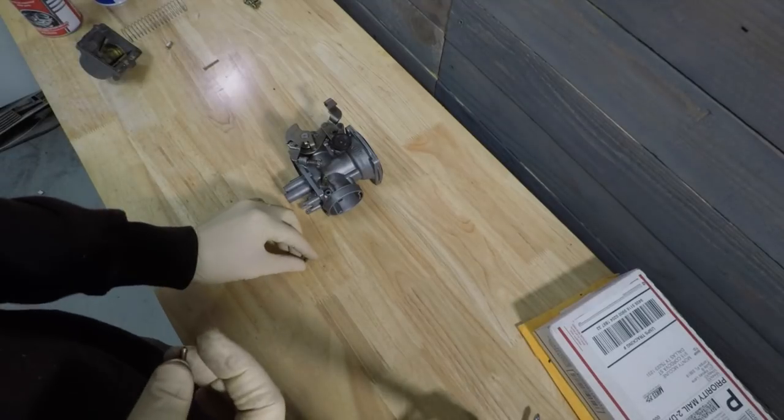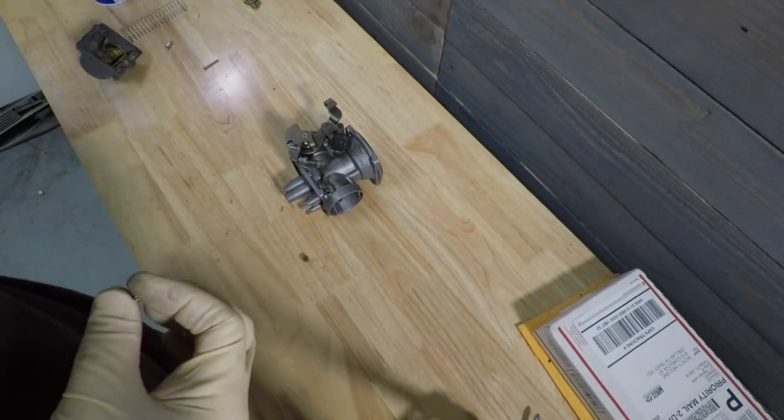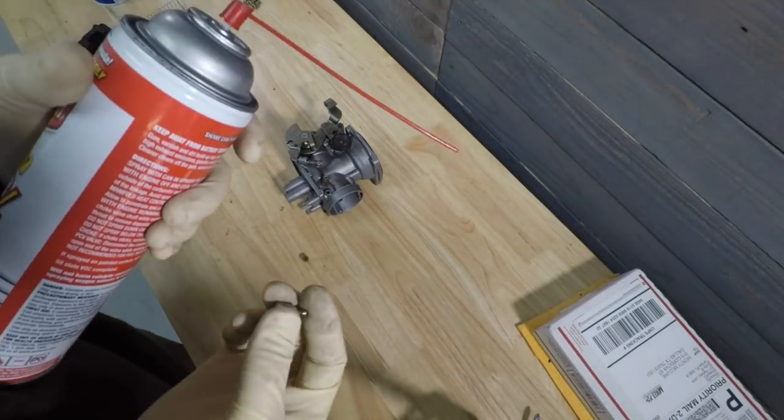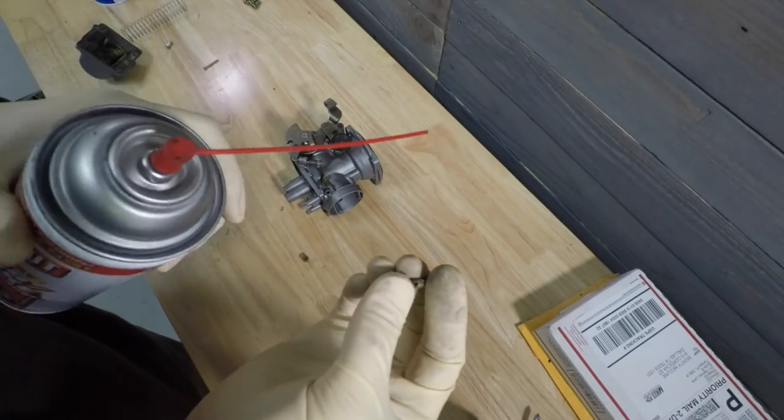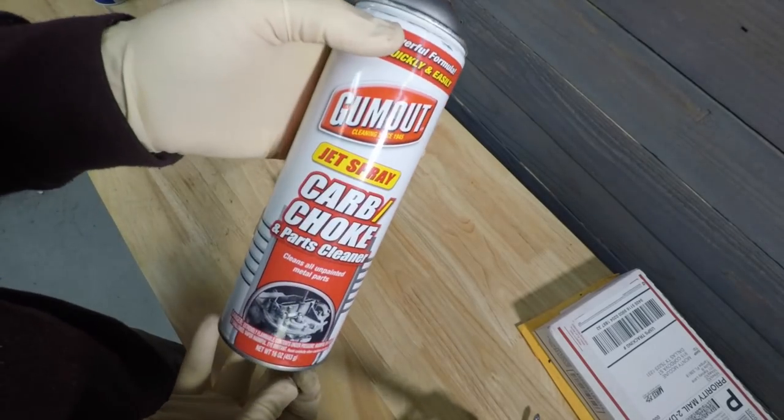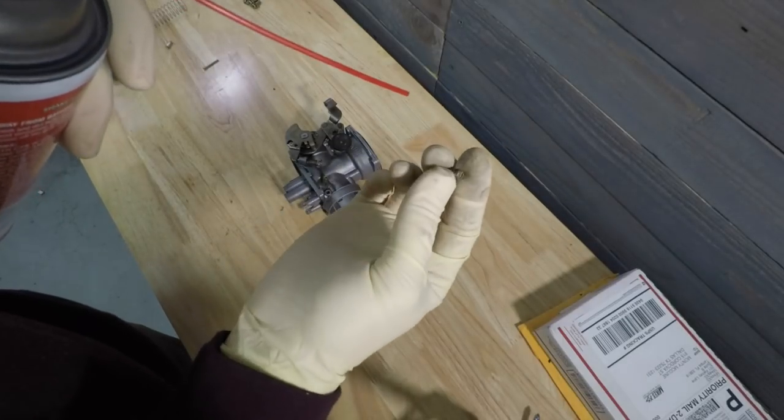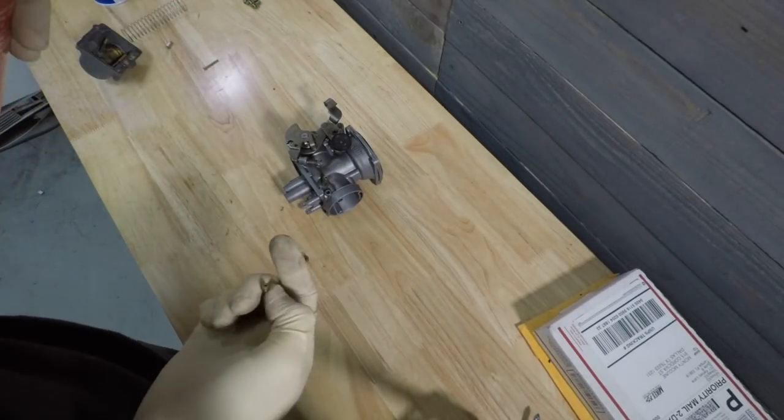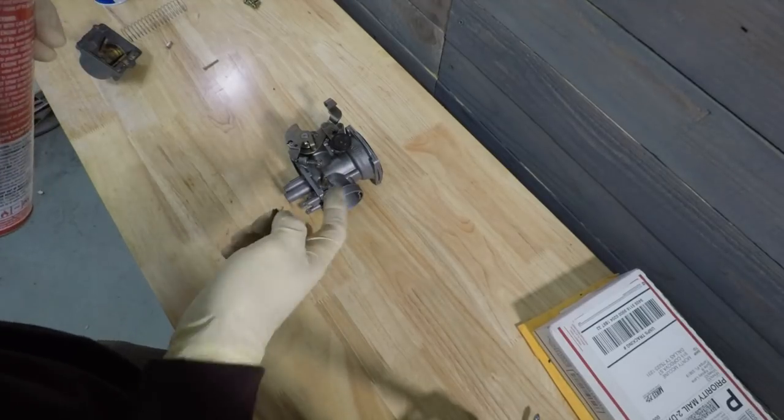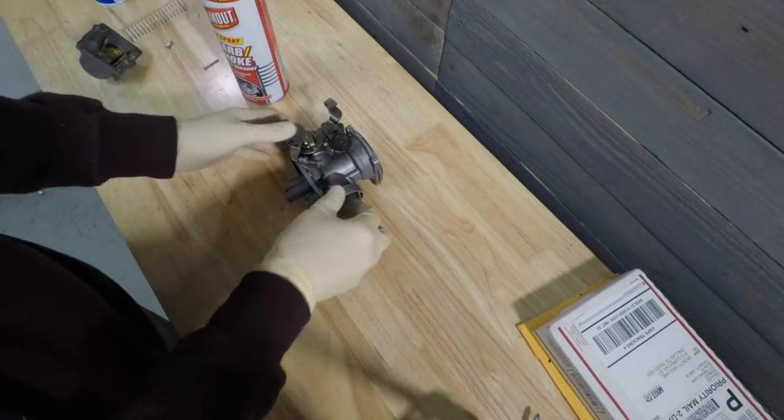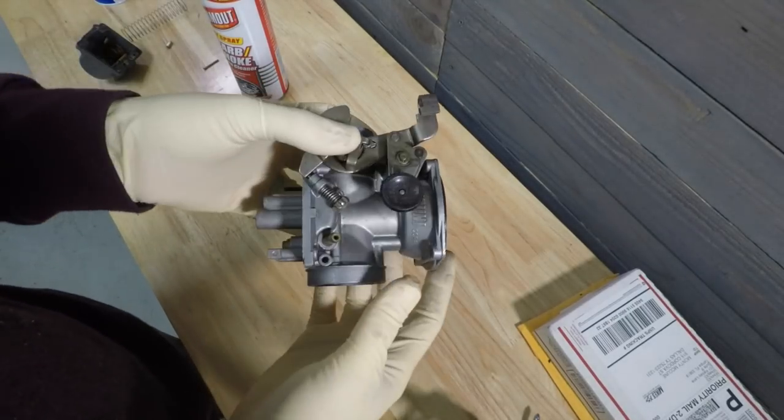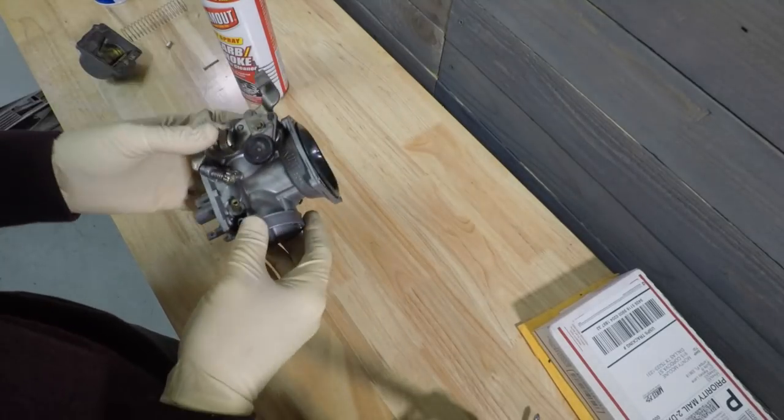So what we want to do is get a carburetor cleaner and I'm not going to do this right now because I don't want to make a mess, but what you want to do is essentially take some carburetor cleaner, blow these out really good. Actually you could even let them soak. A lot of times you can just take all the plastic parts off the carburetor itself and just let it soak overnight in carburetor cleaner.